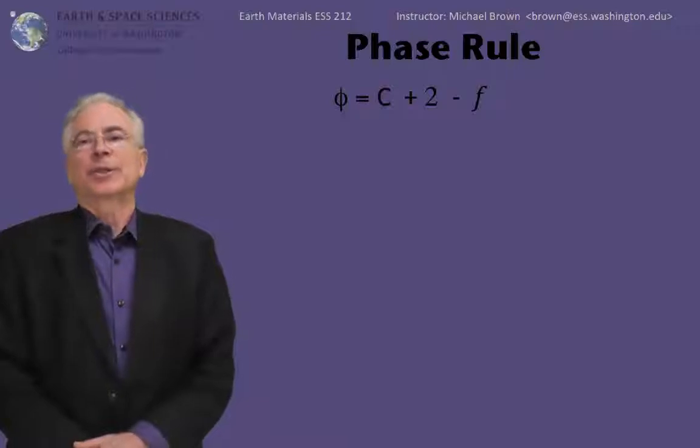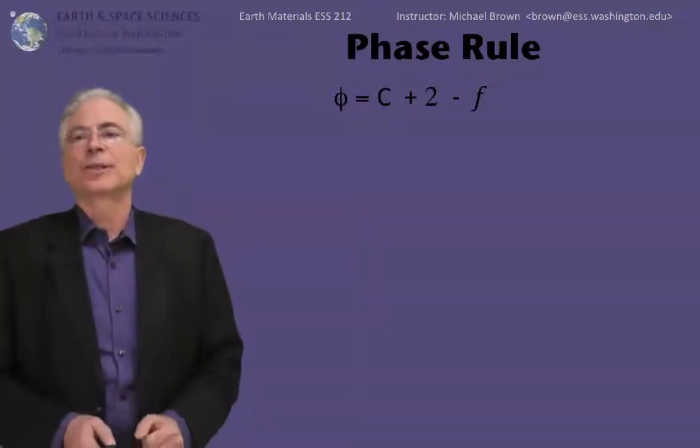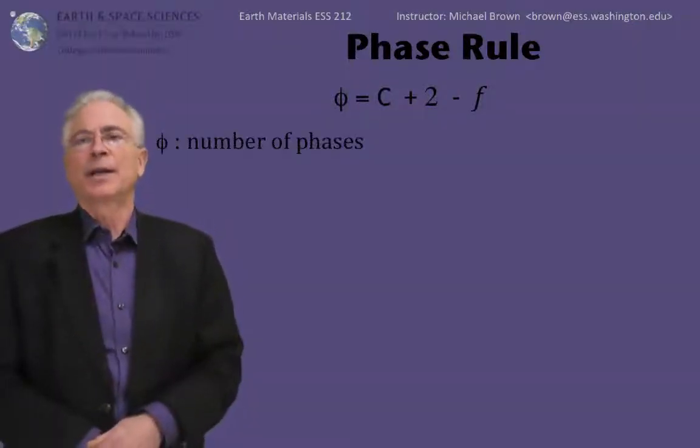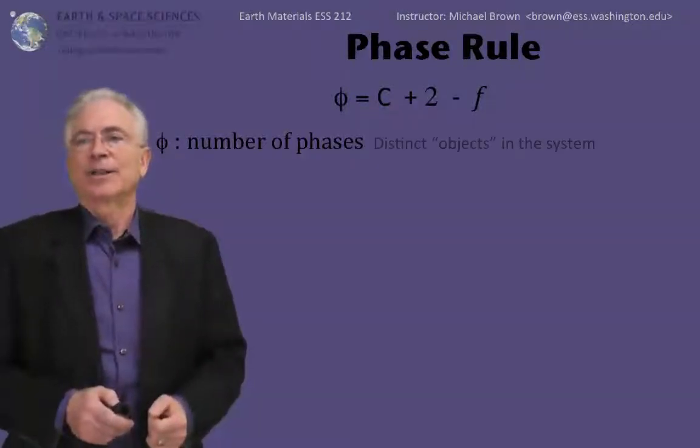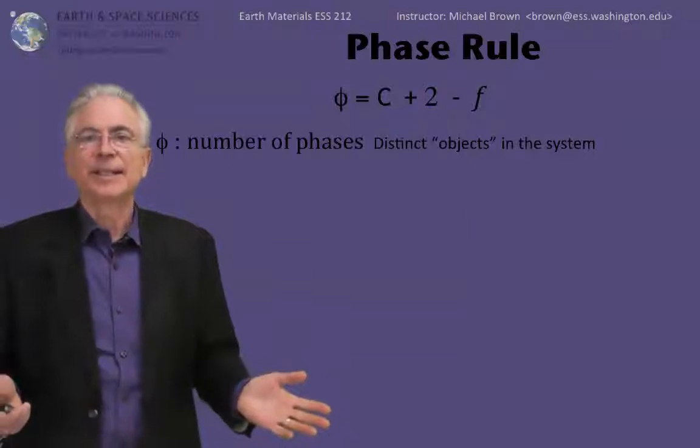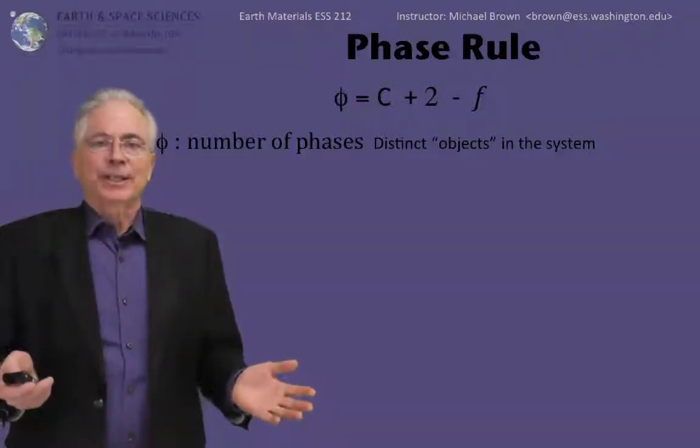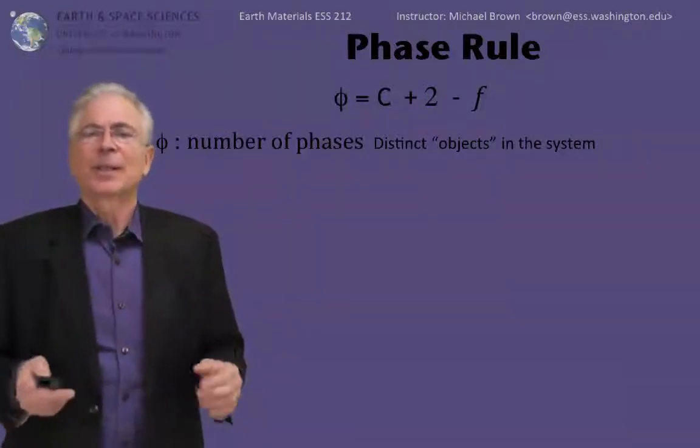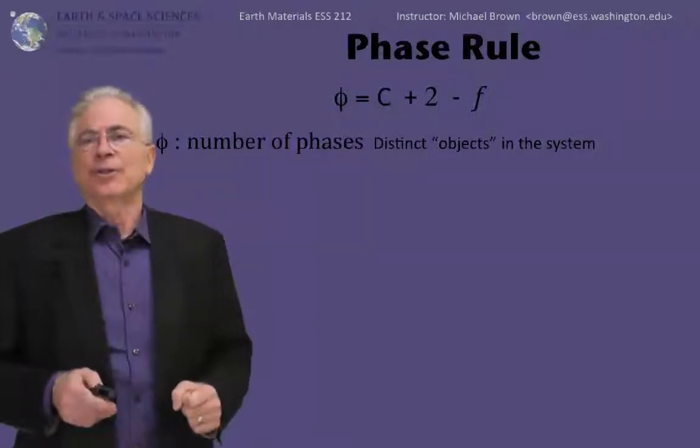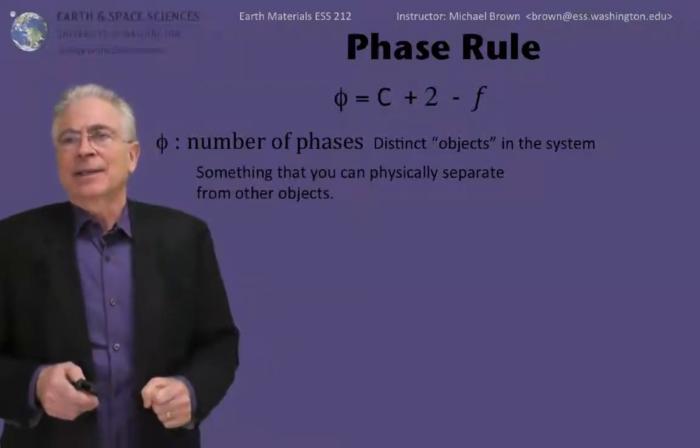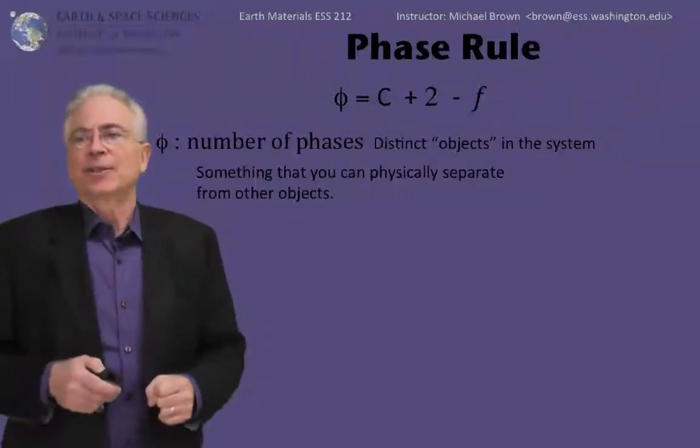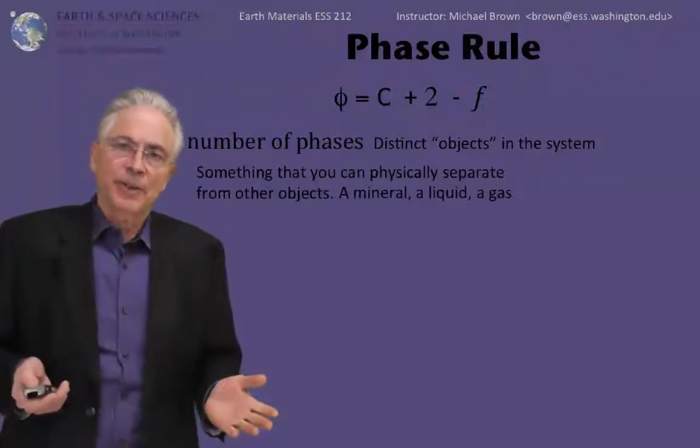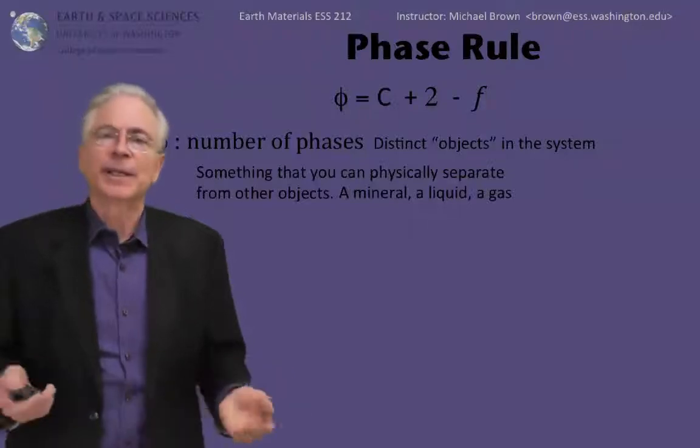So how to interpret this equation? I'm going to step you through the steps. Number one, phi, the number of phases present. What is a phase? A phase is a distinct object in your system, something that you could pick out with tweezers if you had it. You could separate a phase from other phases in your system. It could be a mineral, it could be a liquid, it could be a gas.